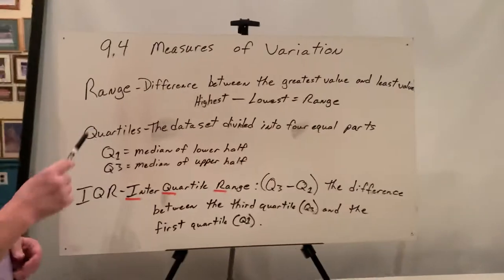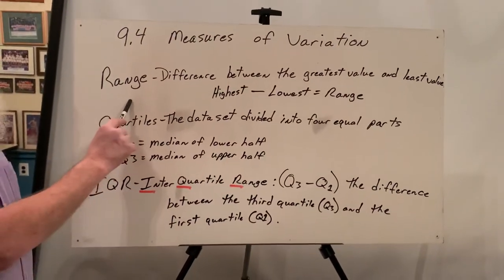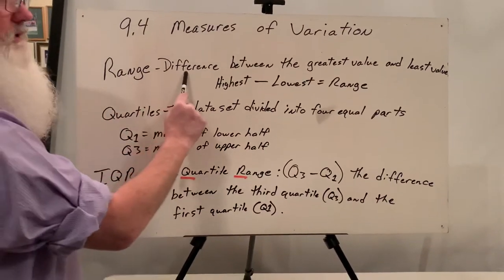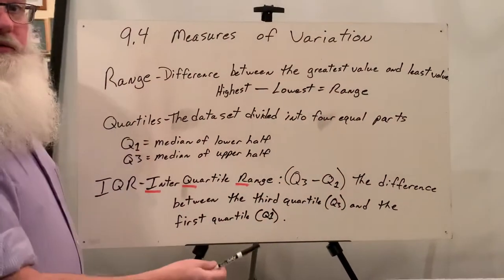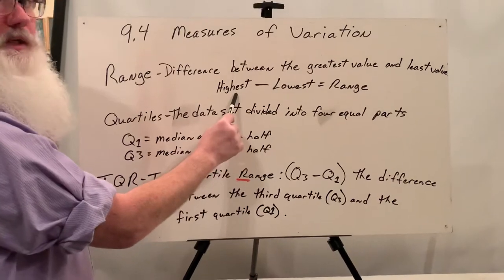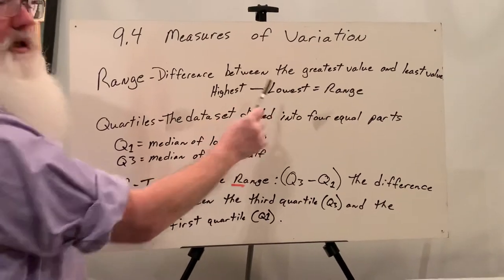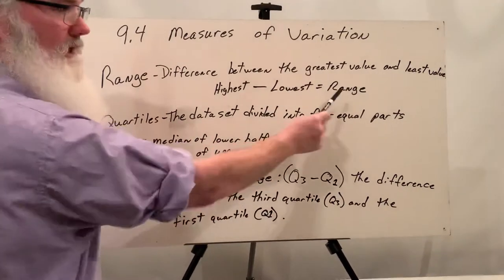Okay, so our first item is range. The range of a data set is the difference between the greatest value and the least value. So you're going to find that by taking the highest number in the data set and subtracting the lowest number from it, and that gives you the range.